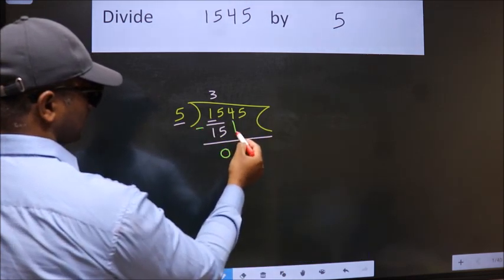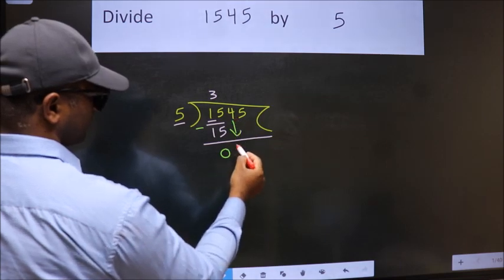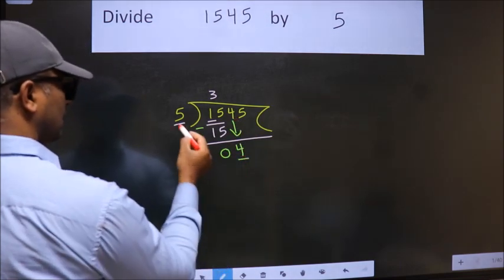After this, bring down the beside number. So 4 down. Now here we have 4, here 5.